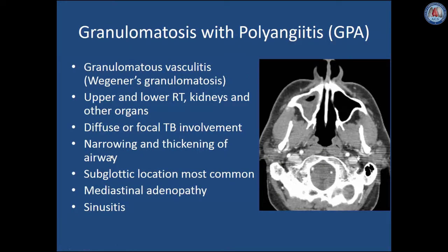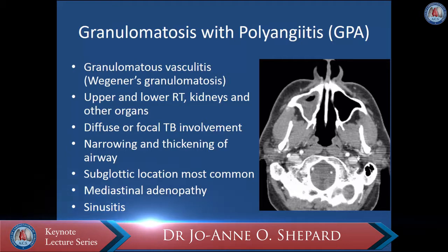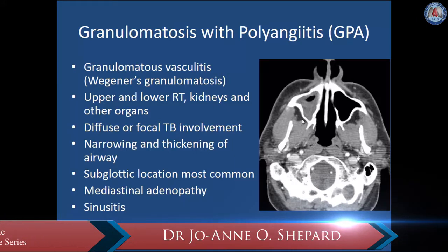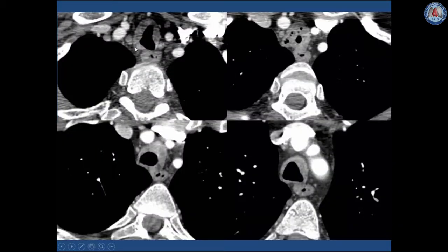Granulomatosis with polyangiitis, otherwise known as Wegener's granulomatosis, is a granulomatous vasculitis that has a propensity to involve the upper and lower respiratory tract, kidneys, and other organs. There can be diffuse or focal involvement of the trachea and bronchi, and narrowing can occur as a result of diffuse thickening. Subglottic location is the most common area of involvement, although any site can be affected. There may be associated mediastinal lymphadenopathy and sinusitis. In another patient with GPA, one can see diffuse circumferential thickening of the proximal trachea extending inferiorly into the mid-trachea.